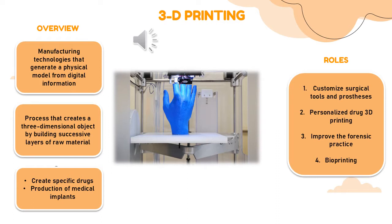How is a drug produced via 3D printing? The 3D printing of drugs consists of printing out a powdered drug layer. Usually we have medicine in the form of tablets or pills, but using 3D printing it will produce medicines in the form of powder, which makes them dissolve faster than average pills.